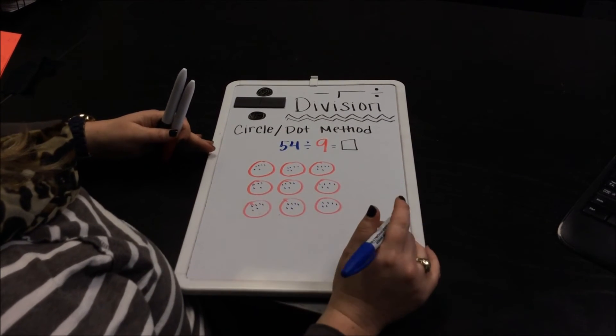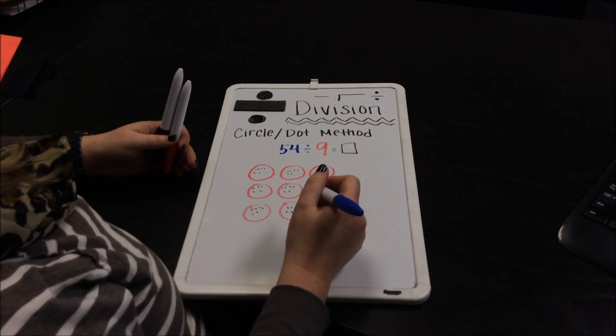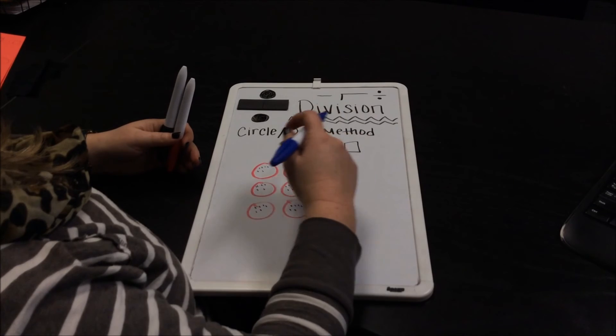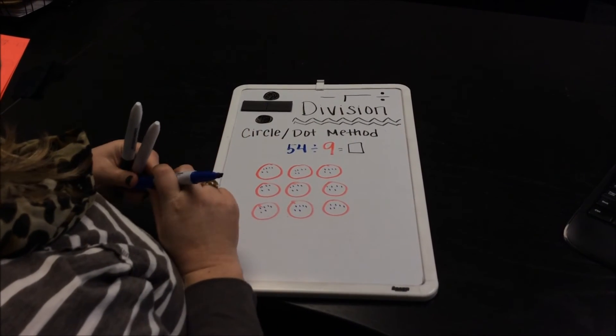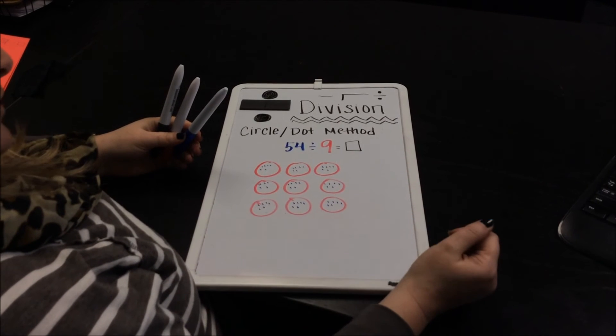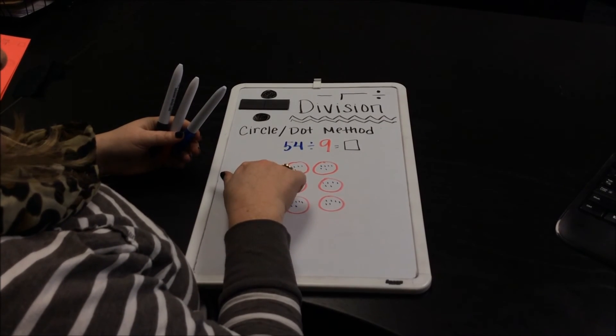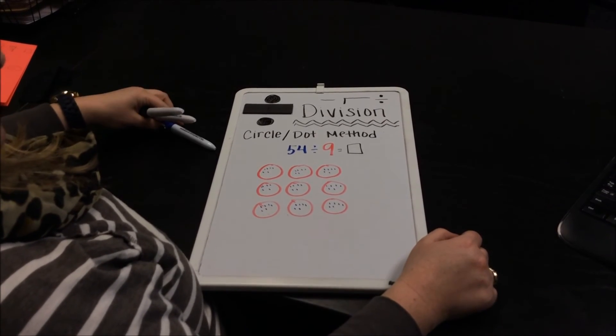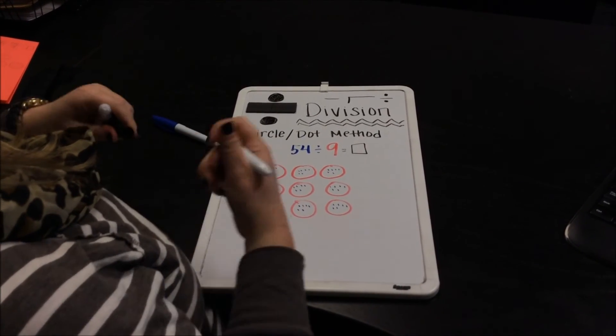And it's very important for the students that when they do that, that they make their dots very nice and neat so that they don't get confused. And they should have the same equal amount in each circle. And I have 6 dots in each circle. And that is our quotient.